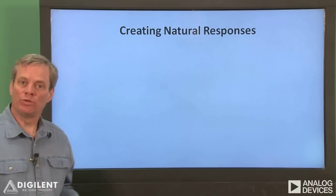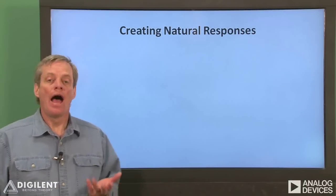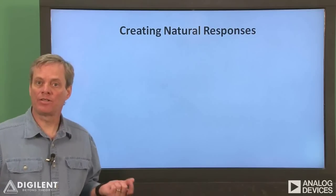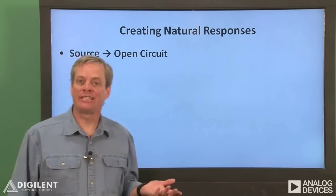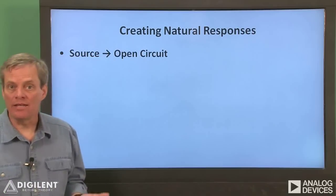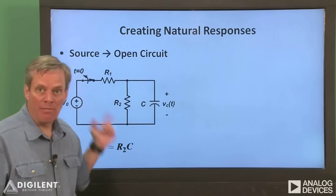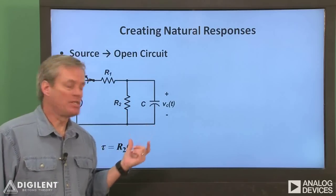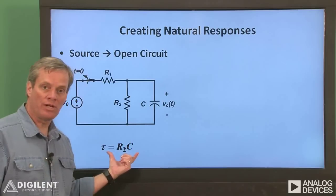In a natural response, the initial voltage across the capacitor is created by applying a power source to the capacitor. How that power supply is removed from the capacitor can affect the response of the circuit. One option is simply to disconnect the source from the circuit, generally using a switch. In this case, the source becomes an open circuit. In this circuit, for example, if we open the switch, the equivalent resistance seen by the capacitor is R2, and the circuit's time constant is R2 times C.